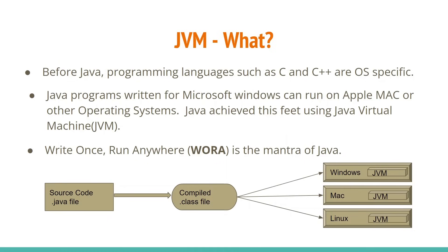In the visual representation, vehicle.java is the source code developed on Windows. A developer compiles it using javac and vehicle.class is created. That class can then be executed on Windows, Mac, or Linux. To wrap up this slide: Write Once, Run Anywhere means if you write a Java program on one operating system, it can run anywhere.